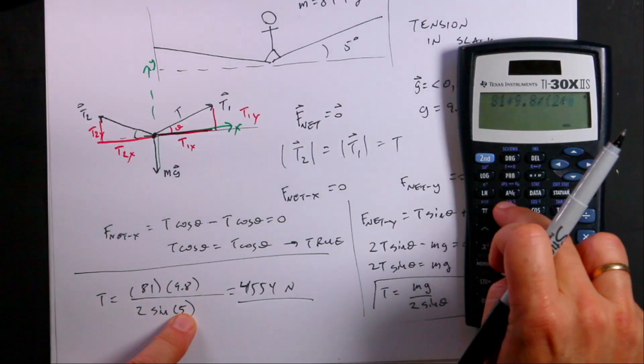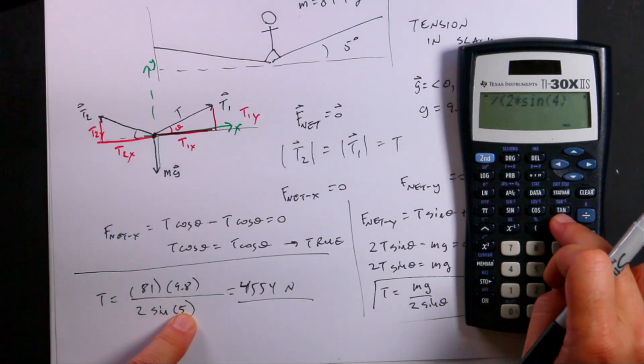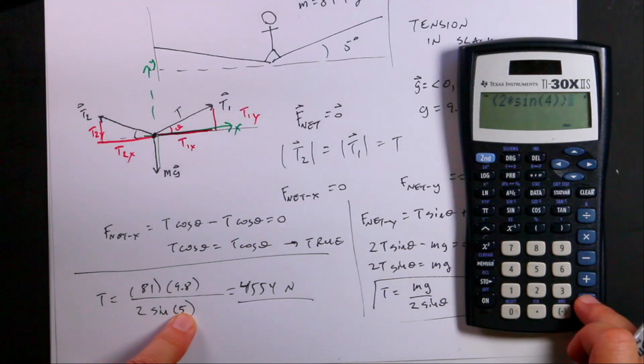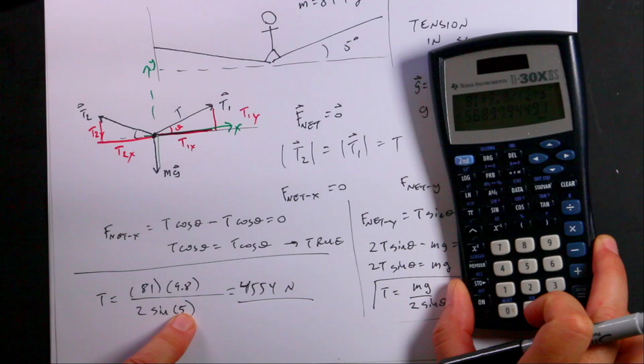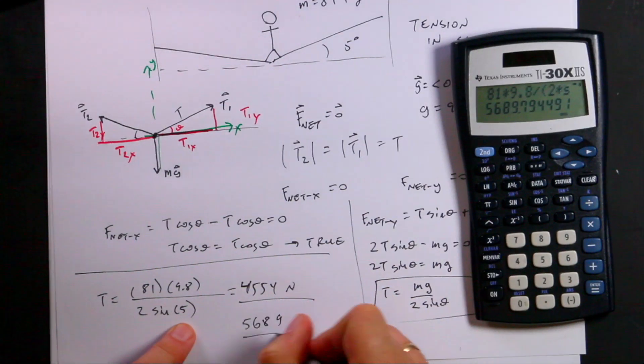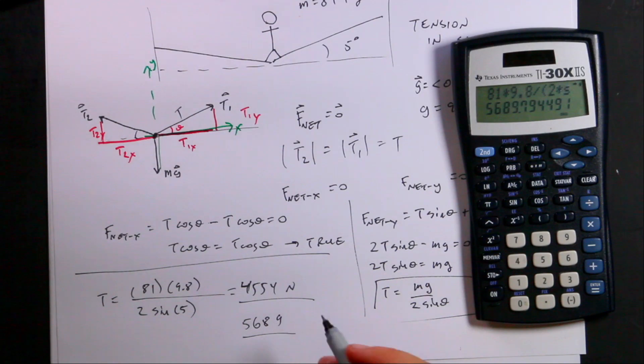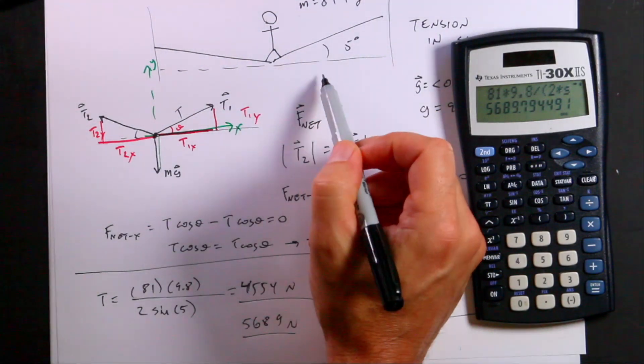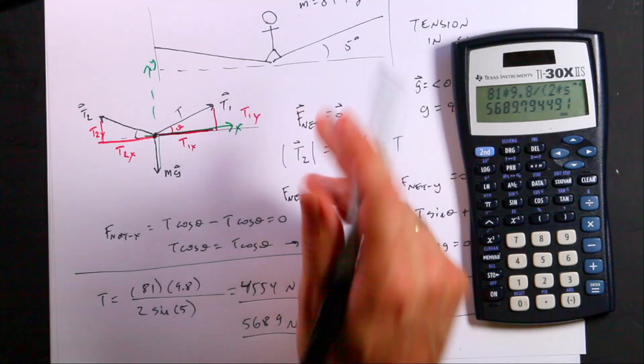I'm going to put in 4 instead of 5. So I'm going to say 81 times 9.8 divided by parentheses 2 times sine 4, close parentheses, enter. And I get 5, 6, 8, 9. So I increase by over 1,000 newtons just by decreasing that degree by one degree.